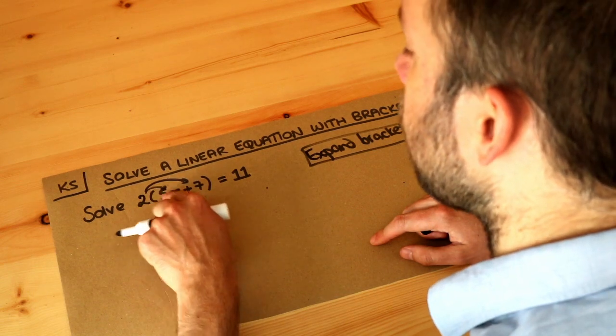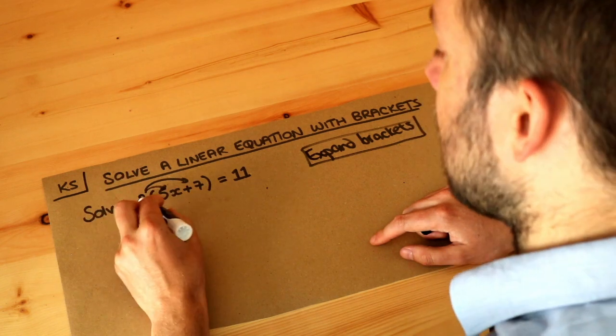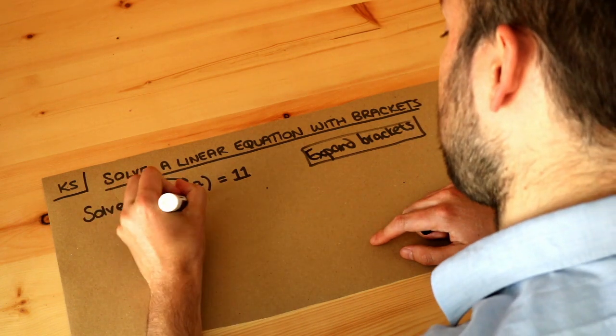So we do 2 times 5x. 2 lots of 5 lots of x is 10 lots of x, and 2 times 7 is 14.